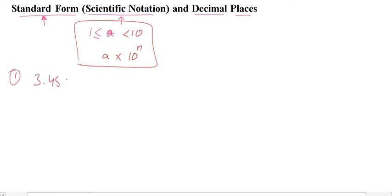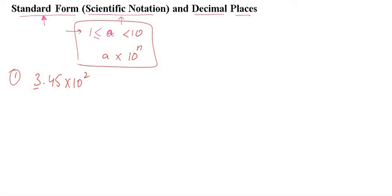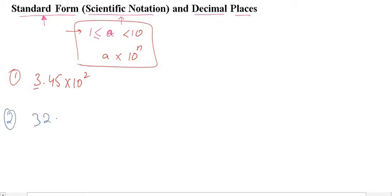For example, 3.45 times 10 to the power 2 is standard form because the first number, 3.45, is between 1 and 10. But if I take another example like 32.45 times 10 to the power 3, this is not standard form because the first number before the decimal, which is 32, is not between 1 and 10.